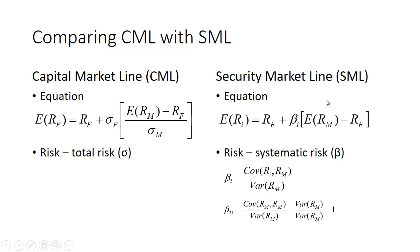Let's look at the equations. The capital market line equation says the expected return of the portfolio equals the risk-free rate plus the standard deviation of the portfolio times the quantity (expected return of the market minus the risk-free rate) divided by the standard deviation of the market. Its measure is total risk, or sigma. The security market line says the expected return for security i equals the risk-free rate plus beta_i times (expected return of the market minus the risk-free rate), using systematic risk, or beta. Beta is defined as the covariance between the security's returns and the market's returns divided by the variance of the market's returns.